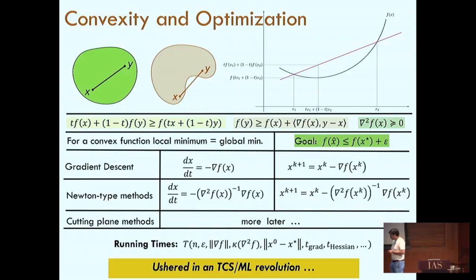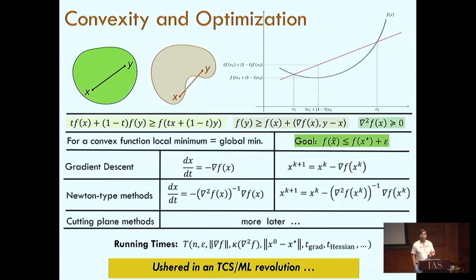In the last couple of decades, it's safe to say that convex optimization and methods developed in that context are really driving algorithm design in machine learning as well as the use of continuous methods to solve discrete problems, which is a trend in theoretical computer science. As a consequence, a lot of progress has happened.